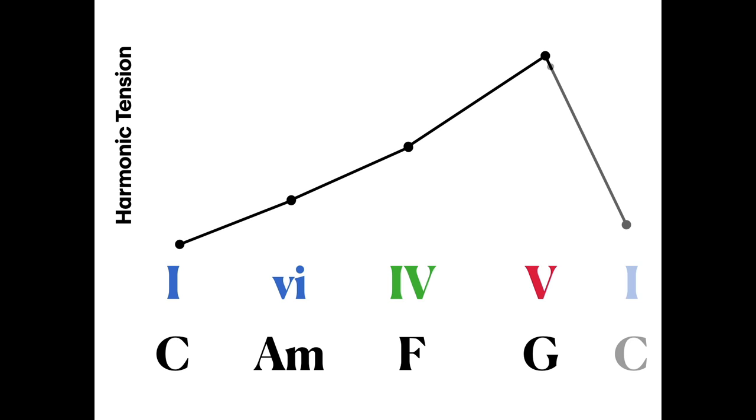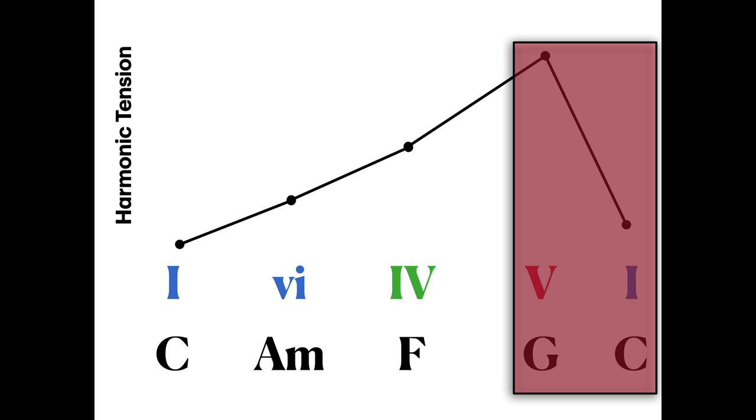This 5-1 cadence, also known as the perfect cadence, is very insistent and final. And it sort of fell out of fashion in pop music, particularly with the influence of blues, soul and gospel, where the plagal cadence 4-1 is no longer an adjunct to tonal harmony, but a core cadence in its own right.